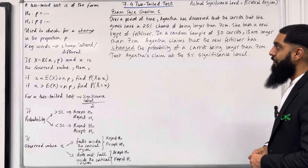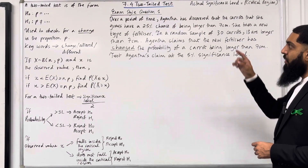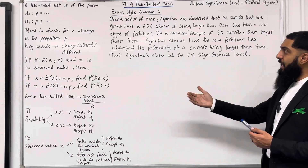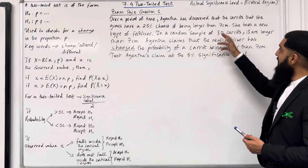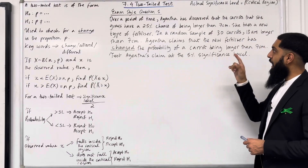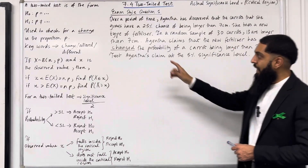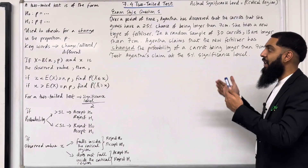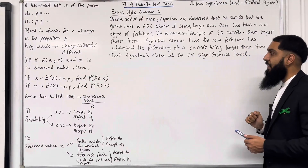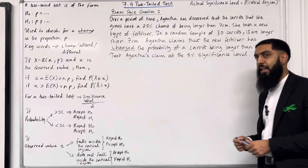Exam-style question 1: Over a period of time, Agatha has discovered that the carrots she grows have a 25% chance of being longer than 7cm. She tries a new type of fertilizer. In a random sample of 30 carrots, 13 are longer than 7cm. Agatha claims that the new fertilizer has changed — the keyword 'changed' indicates a two-tailed test — the probability of a carrot being longer than 7cm. Test this claim at the 5% significance level.